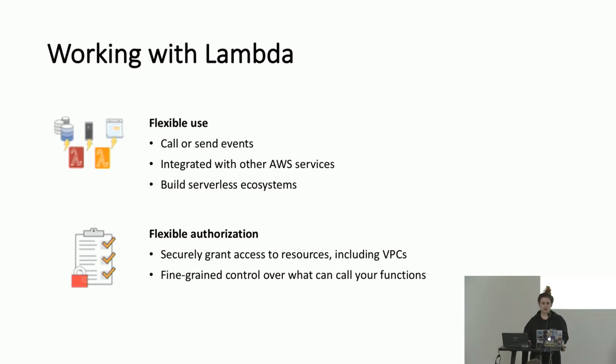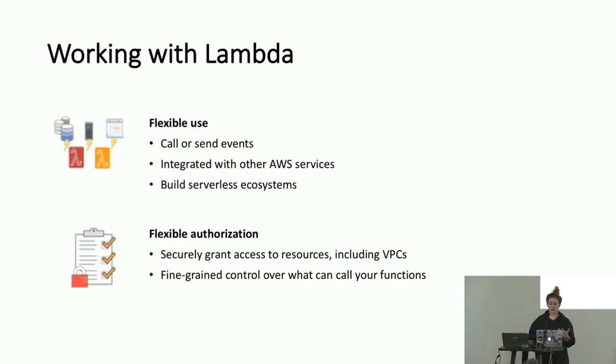Flexible authorization. We're moving a lot of the permissions down from just the server level to the function level. Just like ECS has per-task roles, Lambda can use roles per function. So if you have one function that needs access to DynamoDB and S3, but another function that only needs access to Kinesis, you can do that. You have really fine-grained control over who and what can call your functions, and you can grant access to resources including VPCs.